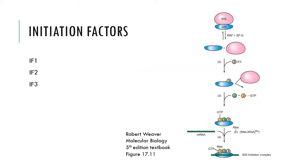As seen in this picture on the right, the large and small subunits first have to dissociate from each other. This happens with the help of IF3, which stops the 50S subunit from rebinding. After this occurs, IF1 and IF2 can bind. IF2 comes on with GTP because it is a GTPase. Finally, mRNA and FMET-tRNA can bind to complete the 30S initiation complex.